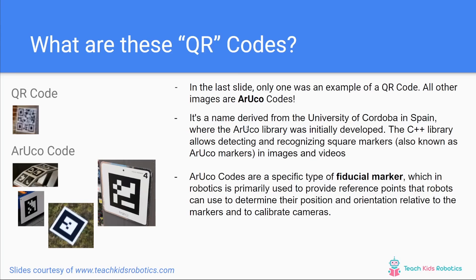These are not actually all QR codes. In the last slide there was only one actual QR code — all other images were actually ArUco codes. What is an ArUco code? First, the name is derived from the University of Córdoba in Spain, where the ArUco library was initially developed. The C++ library allows detecting and recognizing square markers, also known as ArUco markers or ArUco codes, in images and videos.